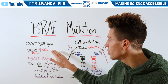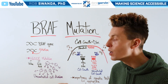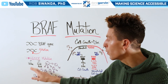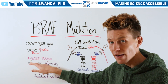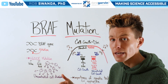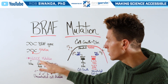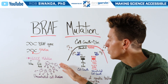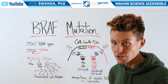The BRAF gene can have a specific mutation known as V600E, which is where one amino acid known as valine at position 600 is mutated to another amino acid known as glutamic acid, leading to uncontrolled cell division.